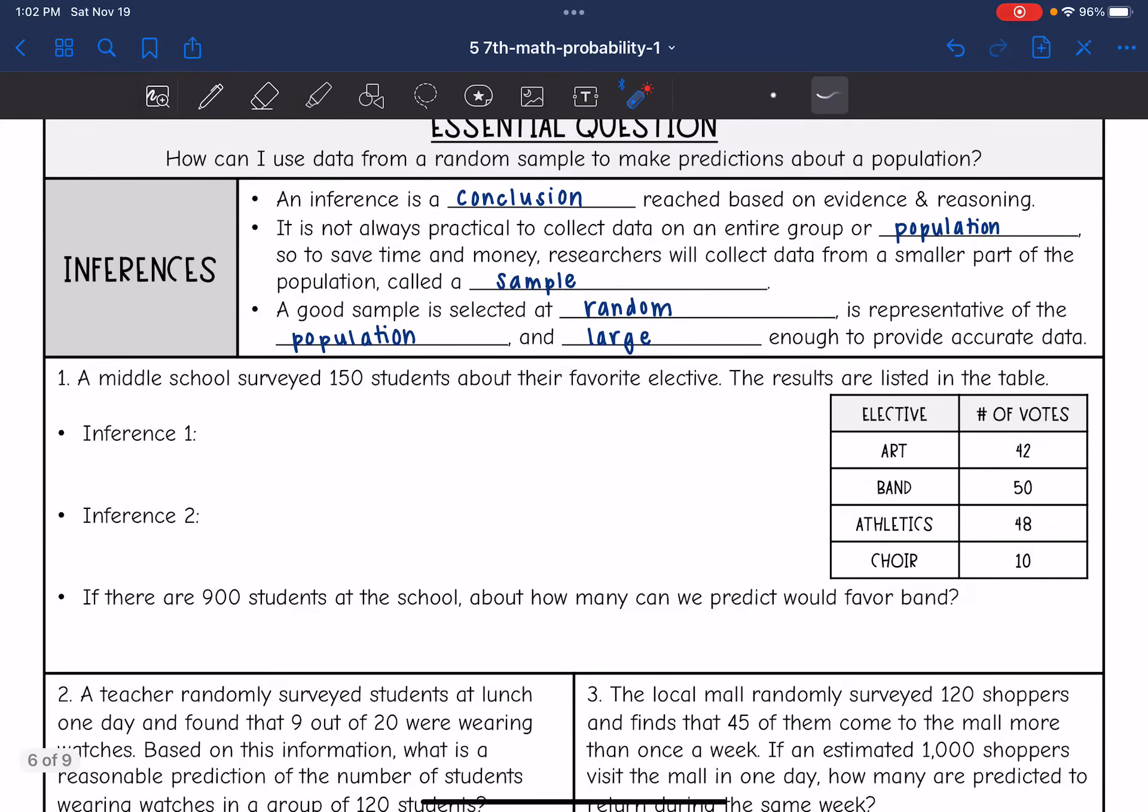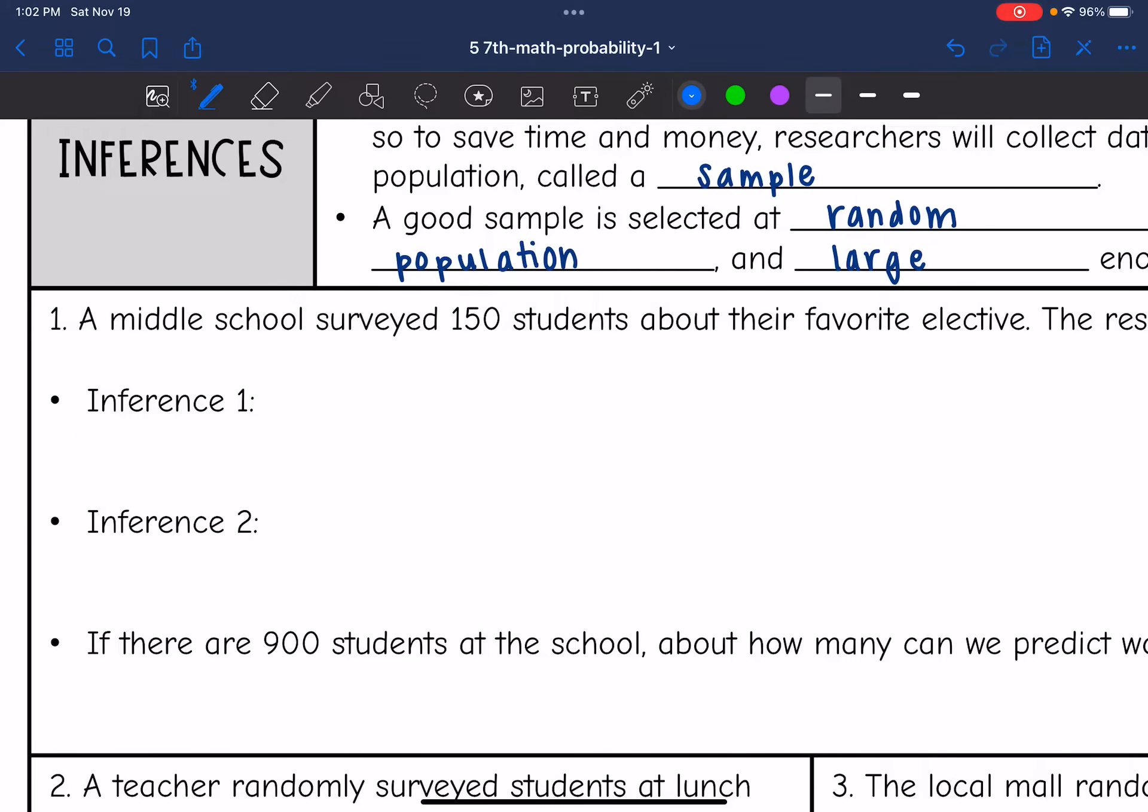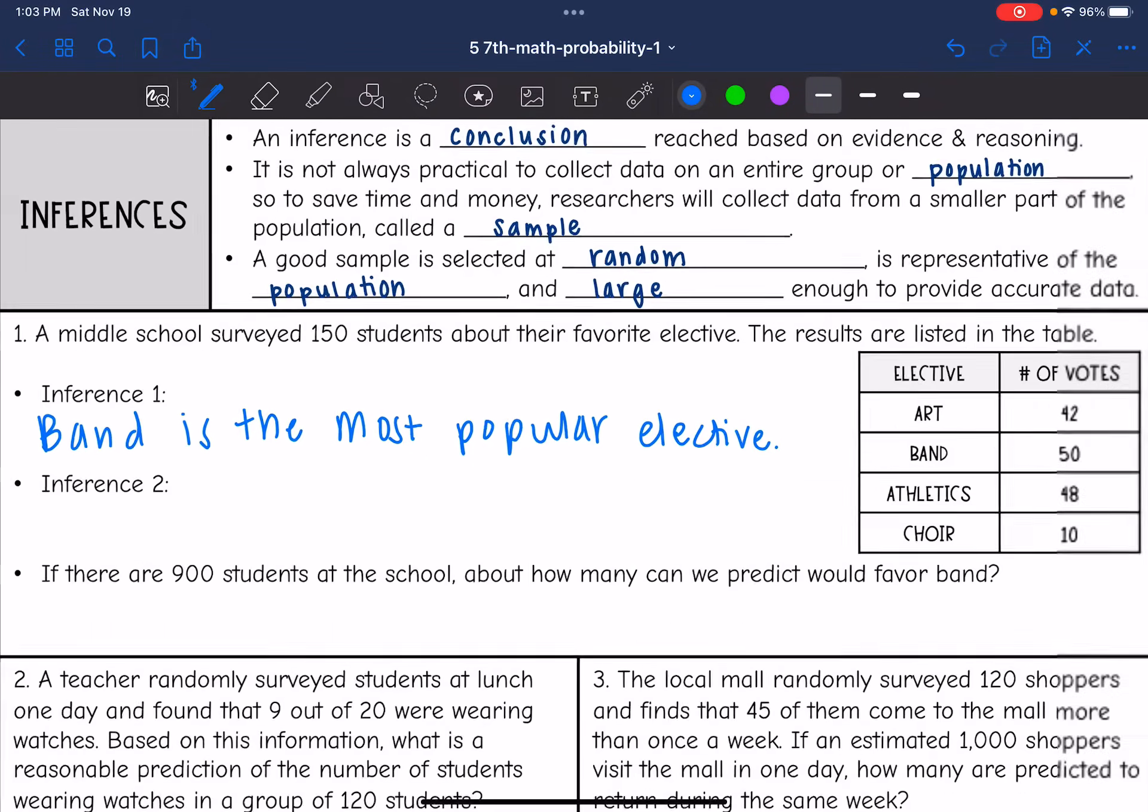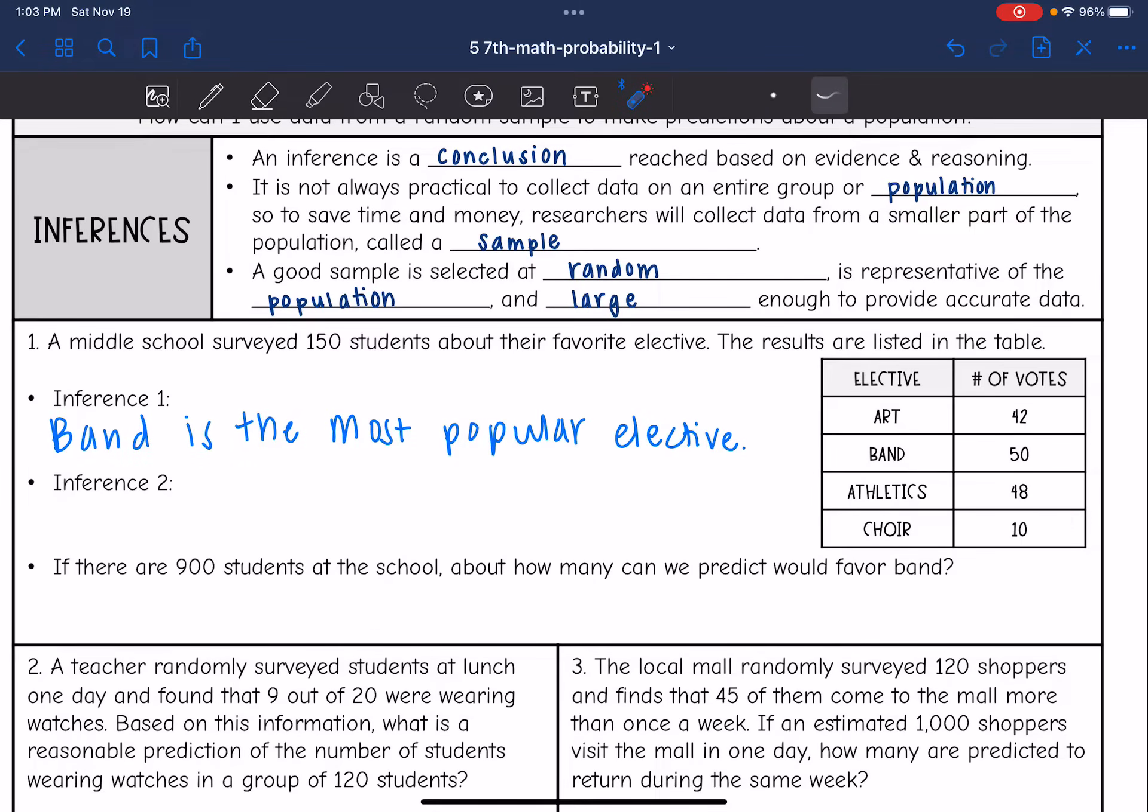So let's look at this first one. It says a middle school surveyed 150 students about their favorite elective. The results are listed in the table. So based on this survey, let's make a couple of inferences. So it looks like the most popular elective is band. They surveyed 150 students and 50 out of those 150 said they liked band. That was the highest number that voted for their favorite elective. So our first inference that we could draw is that band is the most popular elective. The other conclusion I could draw would be that choir is the least preferred elective since only 10 people voted for that.